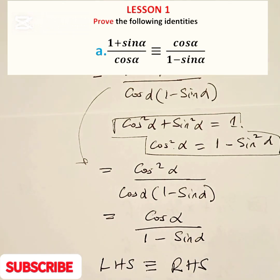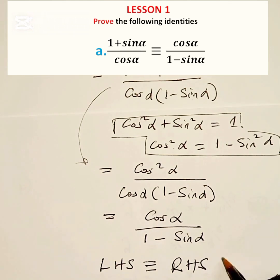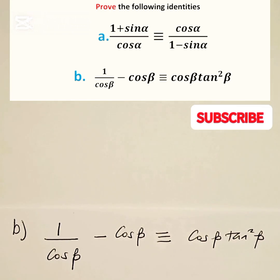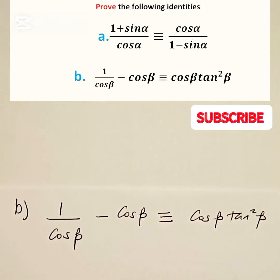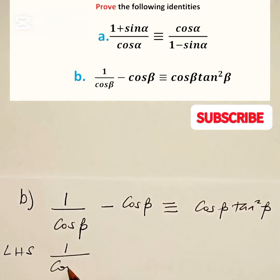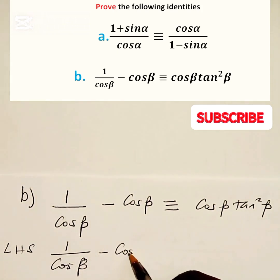Now let's look at part B of this example. We are required to show that 1 over cos beta minus cos beta is identical to cos beta tan squared beta. Now let's consider the left-hand side. We are going to say 1 over cos beta minus cos beta is equal to...